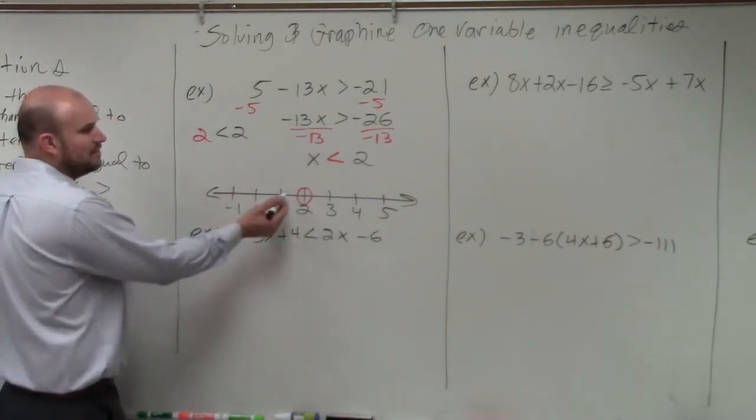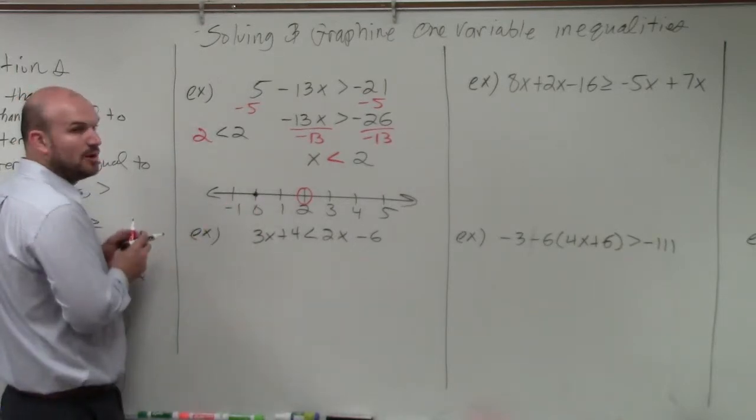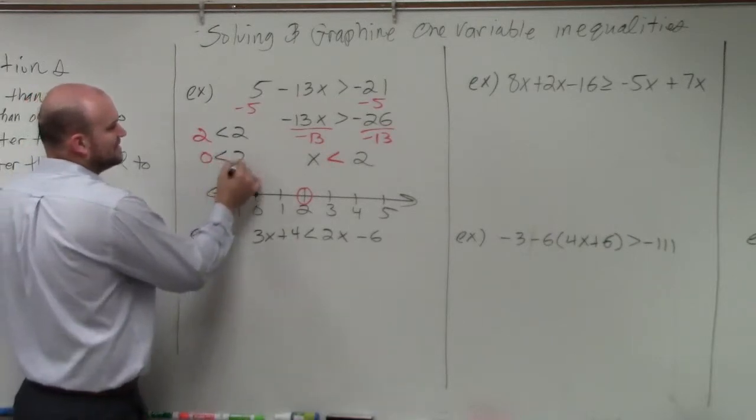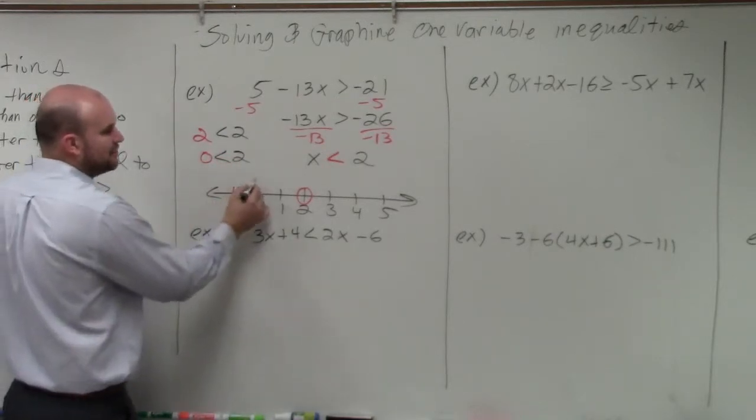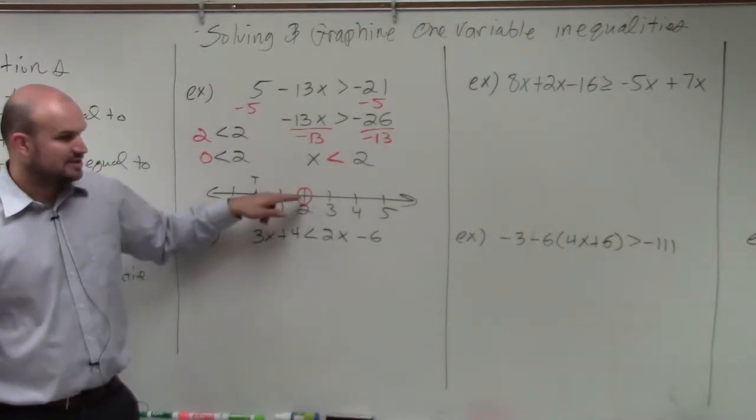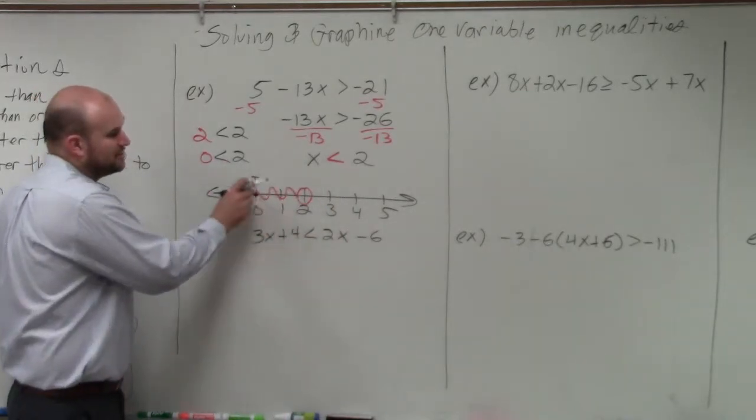Then you can also determine the shading. There's three different ways we can do it. One, you can always pick a random point on the graph. Let's pick 0. Is 0 less than 2? Yes, that's true. So since it's true to the left of your solution point, that means all the values are true to the left.